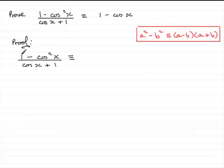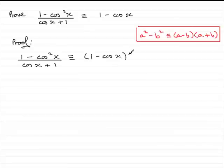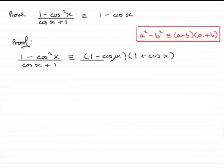This is the square of 1 — 1 squared is 1 — and this is the square of cos x. So we can actually factorise the top here by using this idea. This becomes 1 minus cos x multiplied by 1 plus cos x. Or you could write 1 plus cos x multiplied by 1 minus cos x — it's up to you which way around. This is all divided by cos x plus 1.